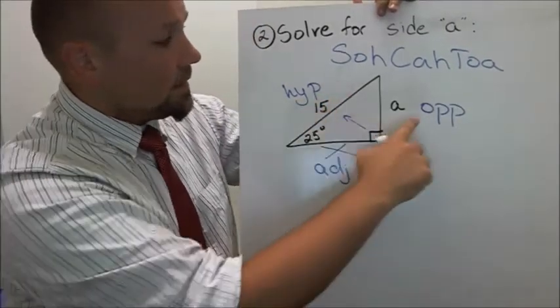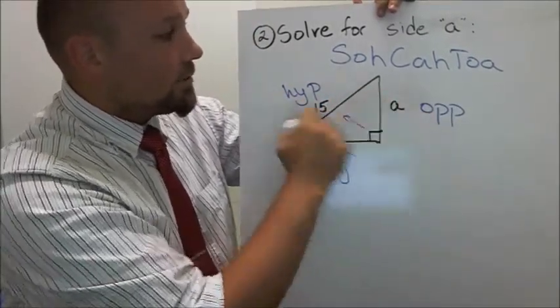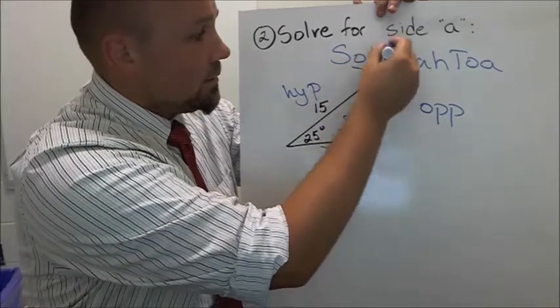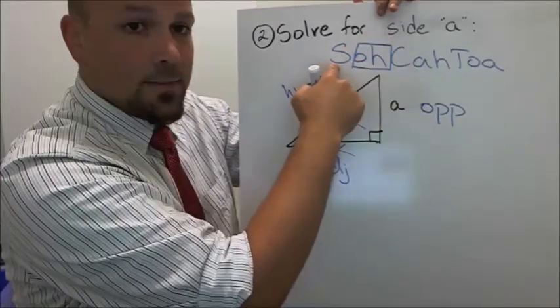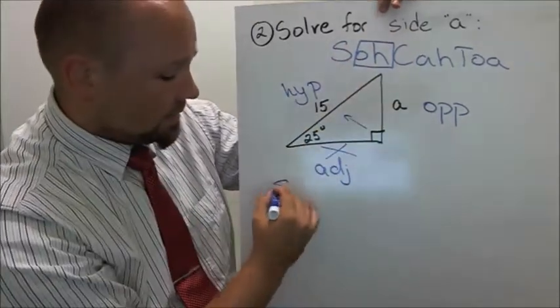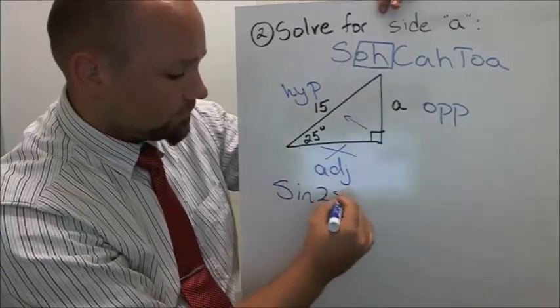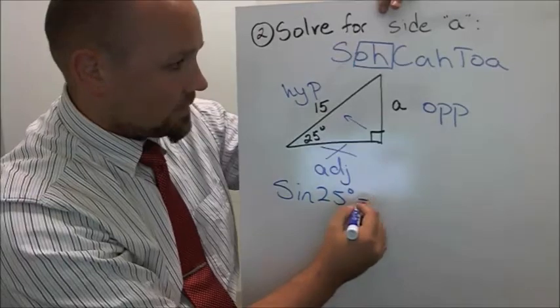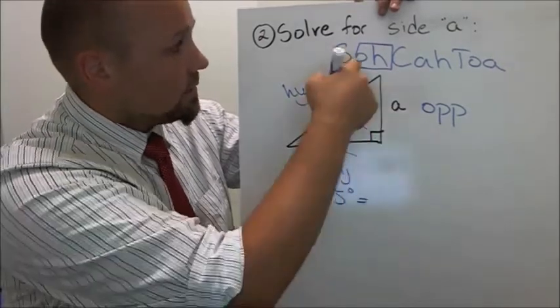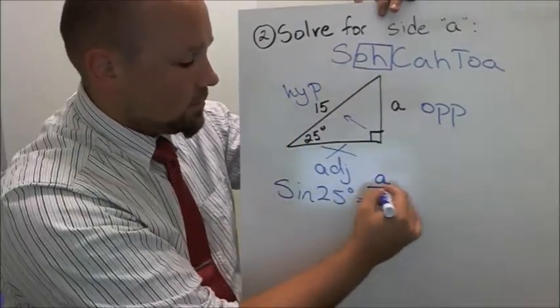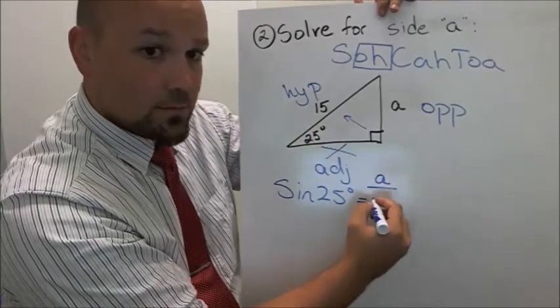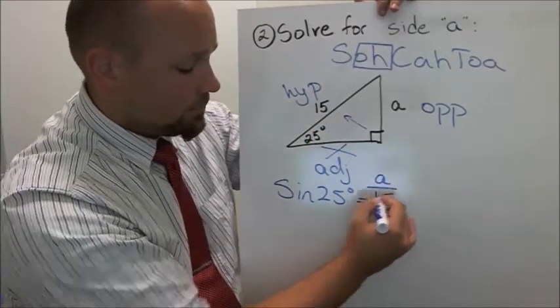So see how the thing that relates O and H is right here. So that's sine. So that means sine 25 is equal to opposite over hypotenuse.